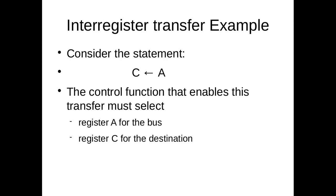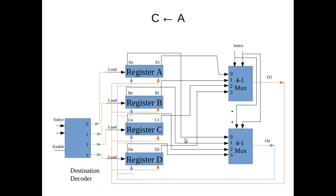That is how registers exchange or transfer data between them. Now consider an inter-register transfer example: C = A. The control function must select register A as the source and register C as the destination. To select register A, we give mux select = 00. The content of register A will then be available through output bus lines O1, O2 up to On, reaching the inputs of all registers.